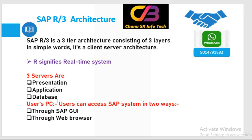Users access the SAP system through GUI — GUI stands for graphical user interface — and web browsers. These two are very important sources for users to access the SAP system. Other user interfaces include mobiles, laptops, and tablets, which are also called user access systems.